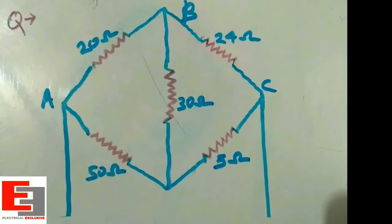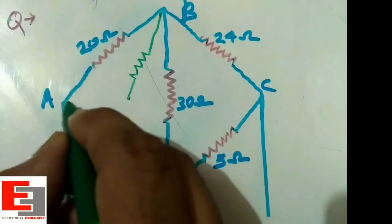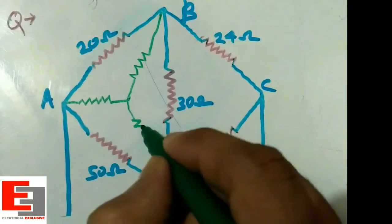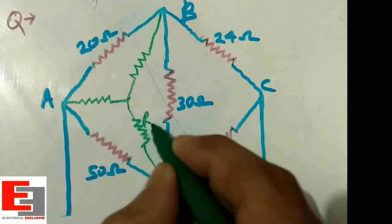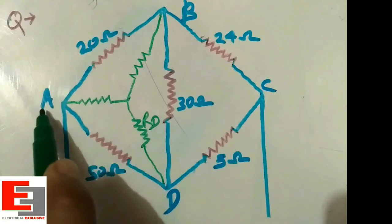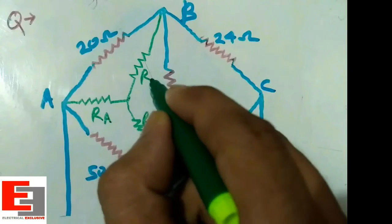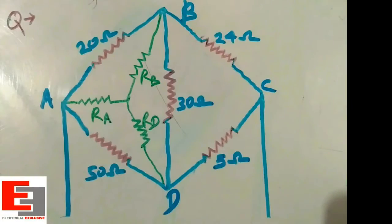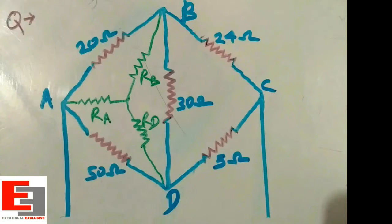Before that, let me name the points: this point is A, this point is B, this is C, and this is D. We shall transform the ABD delta to its star equivalent. Let's assume a midpoint here. This resistance is connected to point D so this is RD. Likewise, this resistance is connected to point A, so this is RA, and this is RB as it is connected to point B.